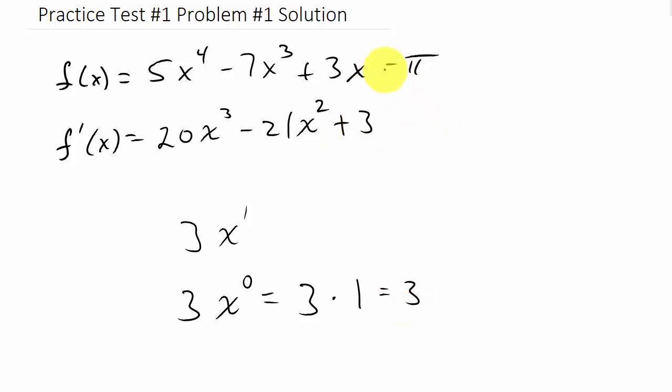And then minus π, well π is just a number, so that's a constant. Anytime you take the derivative of a constant term, that's 0, and so this would be our final answer.